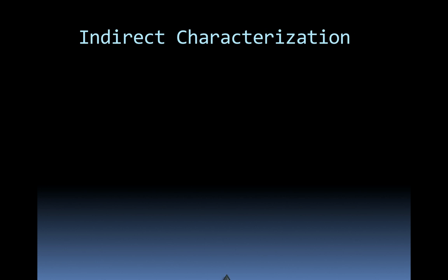The indirect method of characterization has to do with a few different items. The character's name might offer you some insights into what that person is like. For example, you can make some assumptions based on someone with the last name Skywalker. If someone's walking in the sky, they're probably not going to be particularly evil. You'll notice that even Anakin Skywalker, when he turned bad, had to change his name to something more ominous sounding.